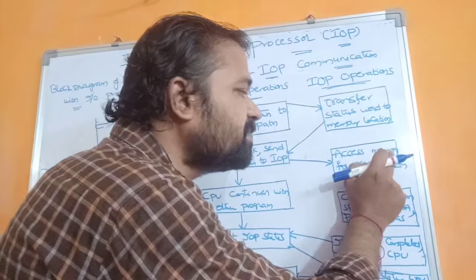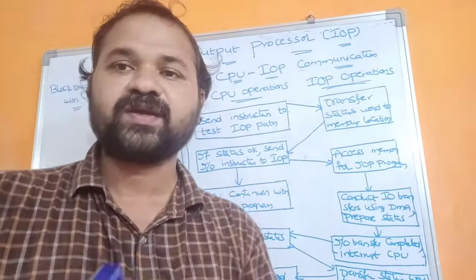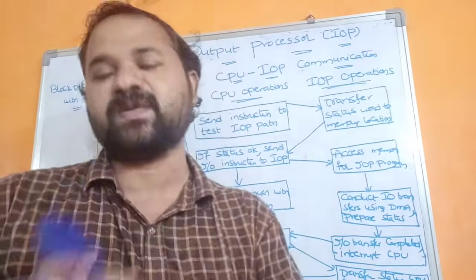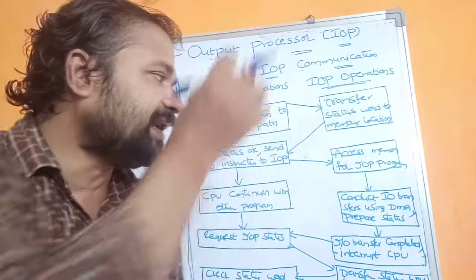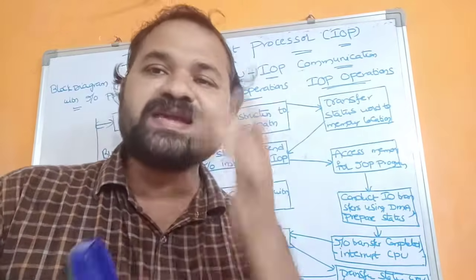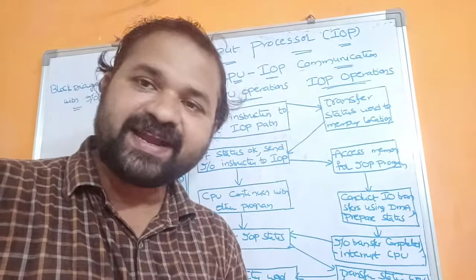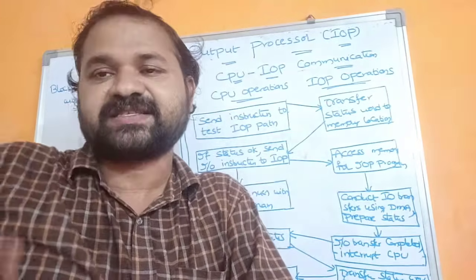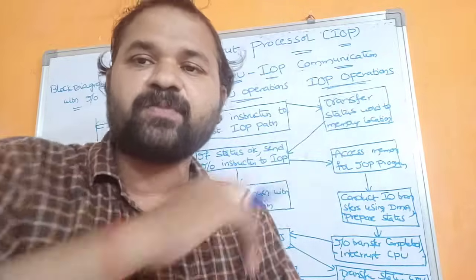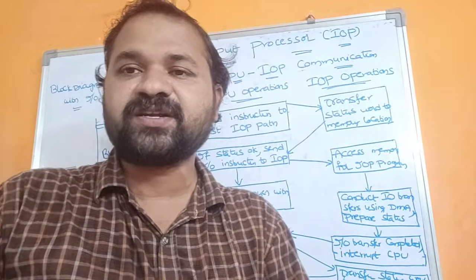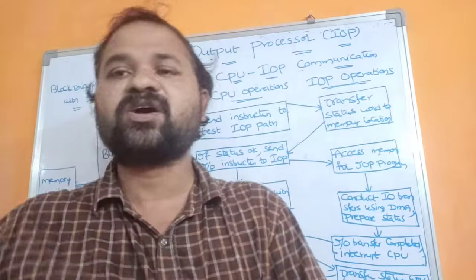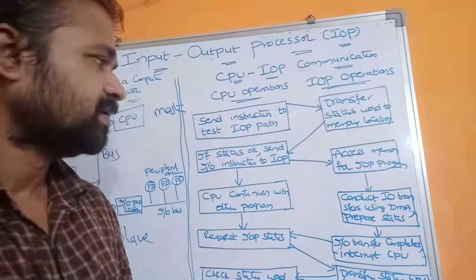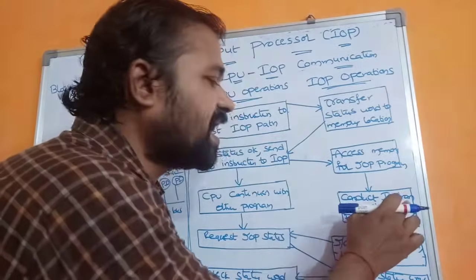The I/O processor then accesses the memory for the corresponding IOP program, because its task is to transfer data between I/O devices and memory. It may be either a read operation or a write operation. If it is a read operation, then the input device information is transferred to memory. If it is a write operation, then the content of memory is placed on the output device.